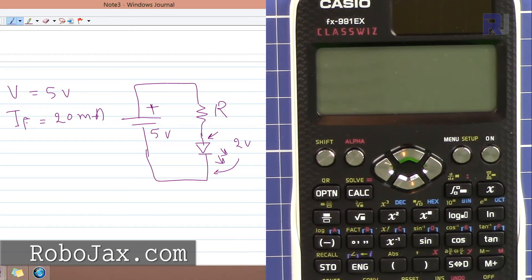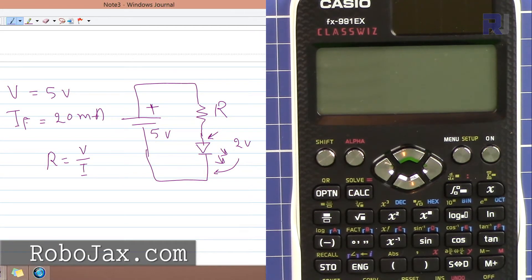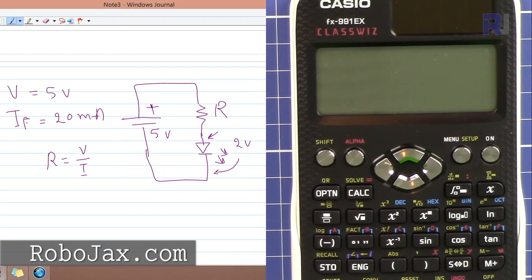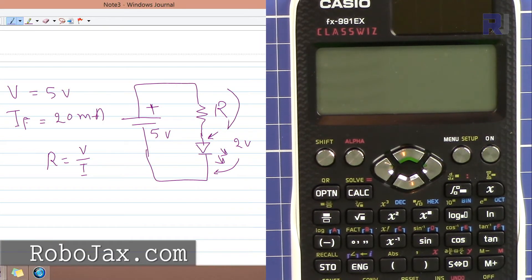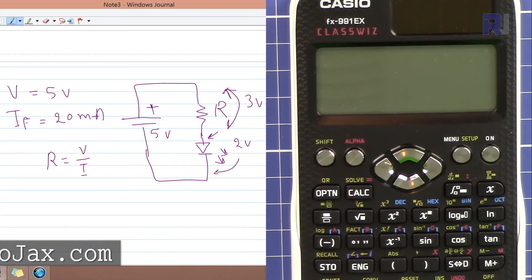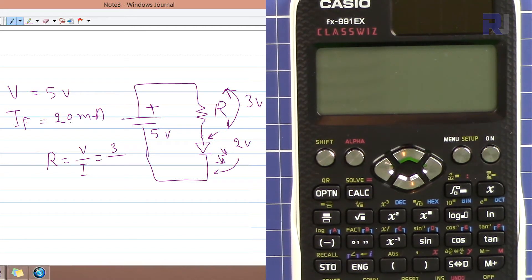So this R we can calculate as follows: R is V over I. Now the voltage across this is 2 volts, so we will have here 3 volts on the resistor, because this is 5 minus 2 equals 3. So 3 volts left. Now in this formula we have 3 divided by 20 milliampere, written as 0.02.